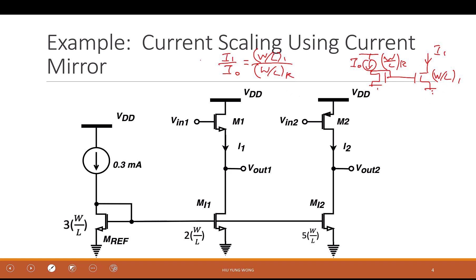under the same gate potential, because the idea is to convert the current to a potential Vx. So both of them share the same Vx. So under the same gate bias, if I have a larger transistor, I should have a larger current, okay?